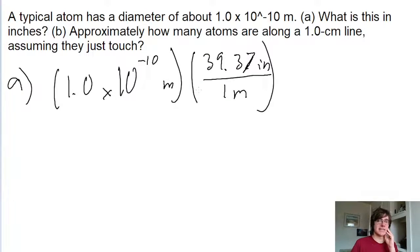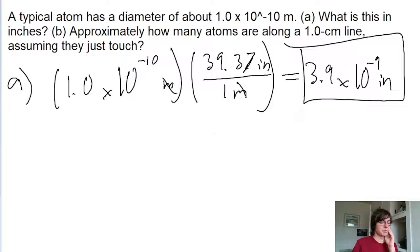We'd apply this as a chain-link conversion, where we multiply our starting value by 39.37 so that the meters cancel out. This gives us a value in inches of 3.9 times 10 to the power of negative 9 inches. So that's the answer to part A.